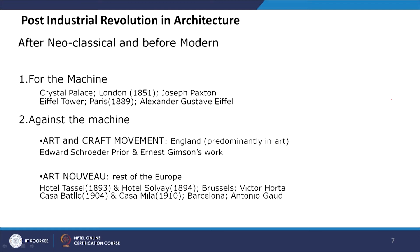In the for-the-machine movement, two very important buildings stand out: Crystal Palace in London, designed by Joseph Paxton, and the Eiffel Tower in Paris, designed by Alexandre Gustave Eiffel. This movement started mainly in Europe and also percolated into America. The Statue of Liberty was designed by Bartholdi, but its structural design was done by Gustave Eiffel himself.